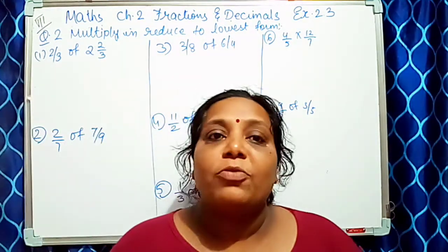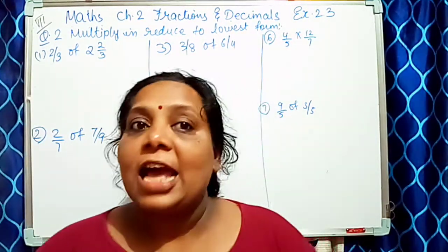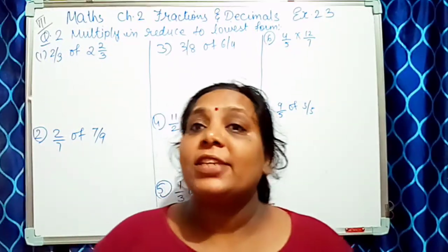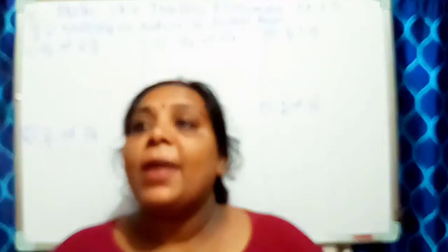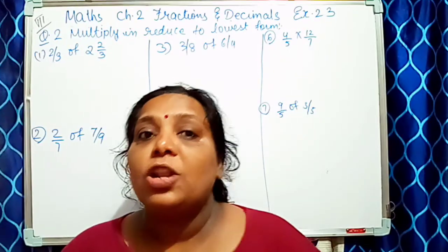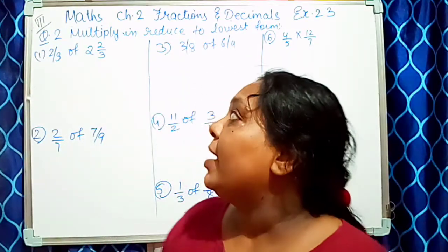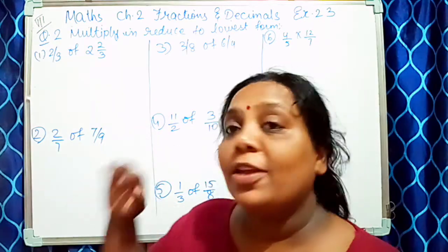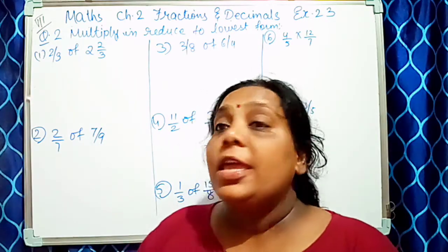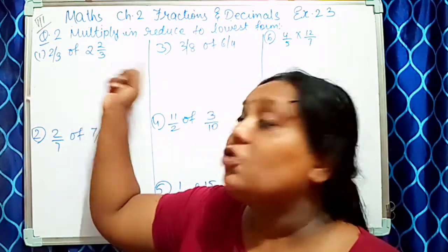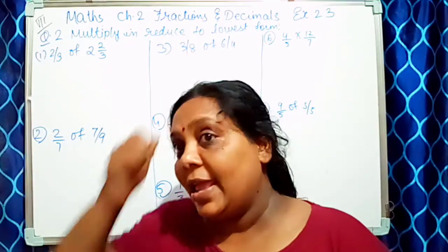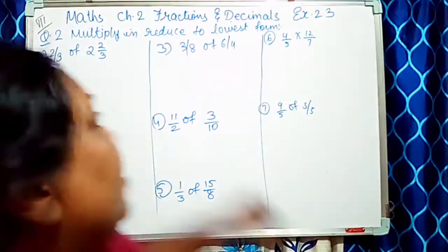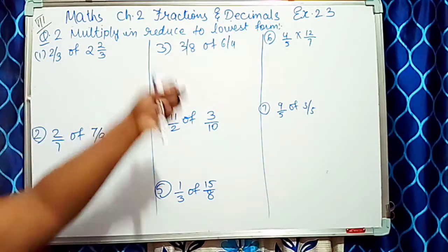Hello friends, welcome to my channel. Class 7 Maths, Exercise 2.3 ke questions — multiply and reduce to the lowest form. In these sums, you have to take the fractions from their given form and bring them to the lowest form.